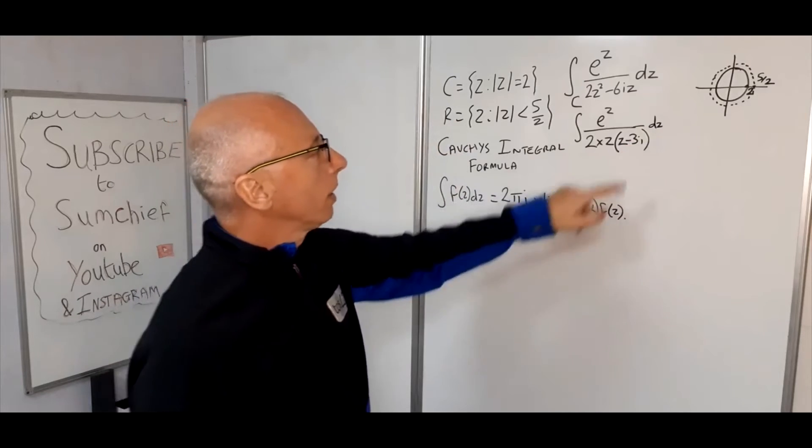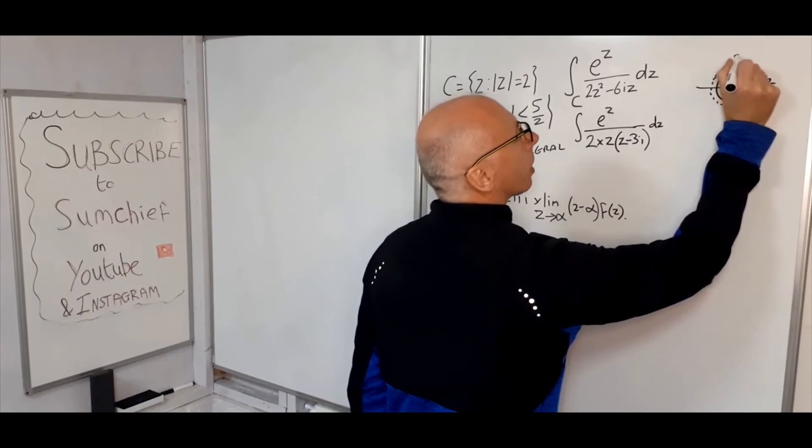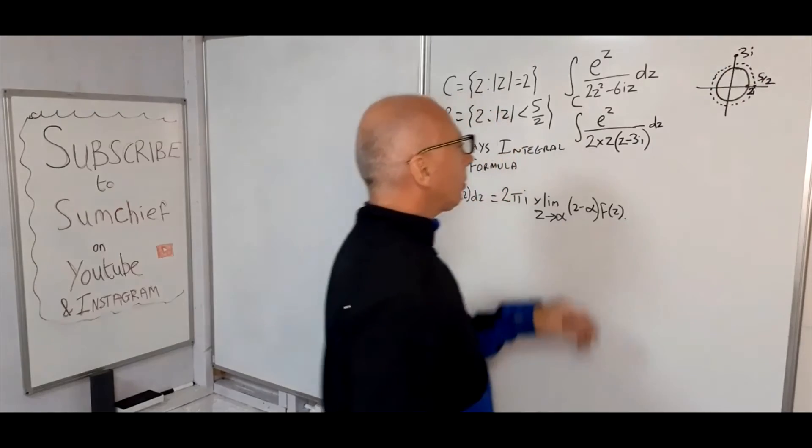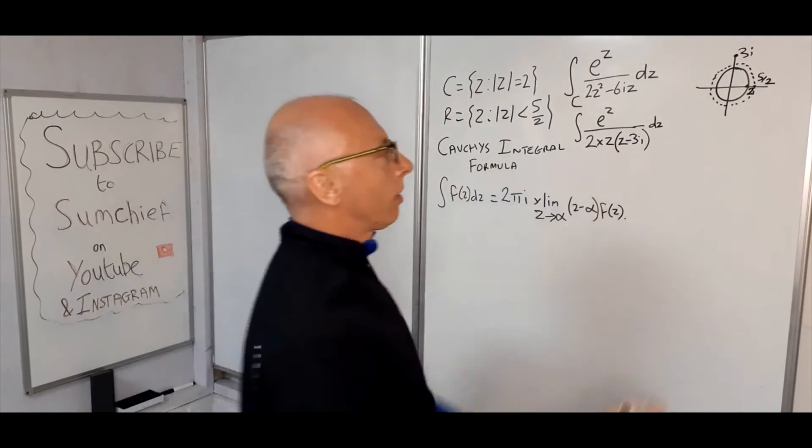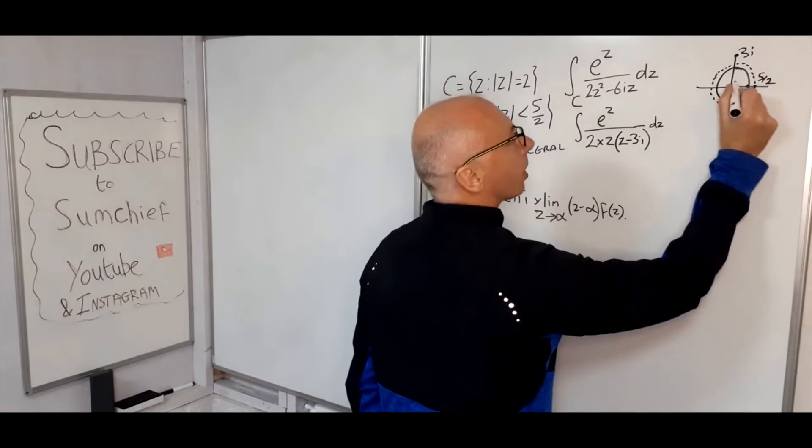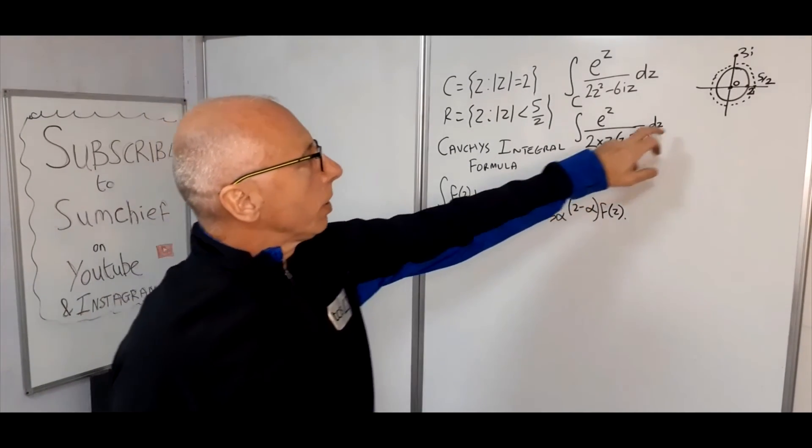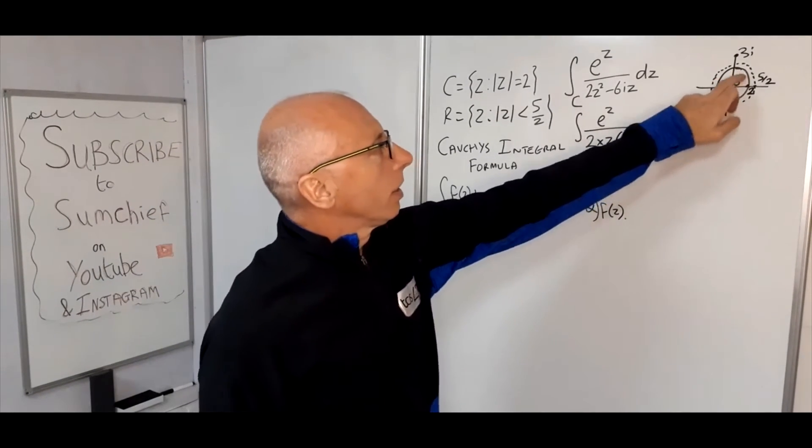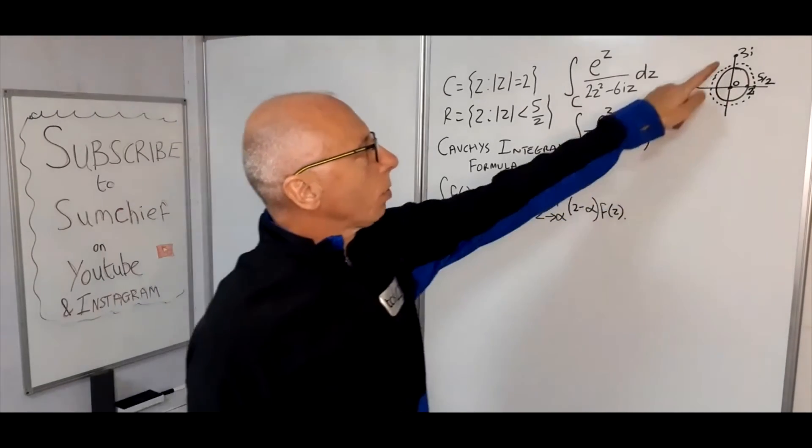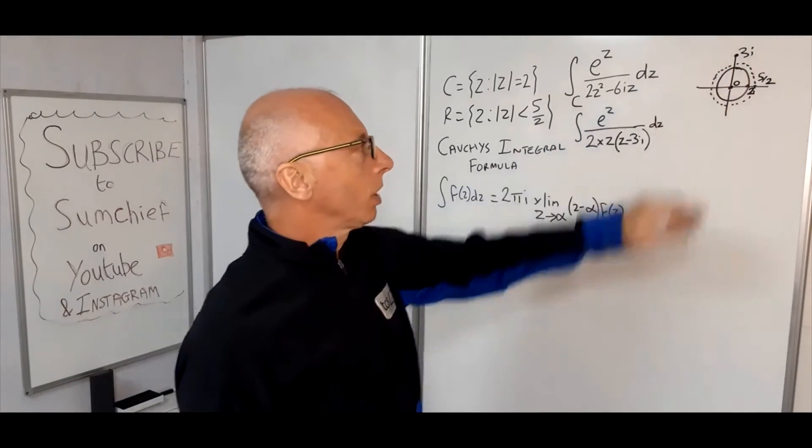So we've got one at 3i, which is going to be up here somewhere, and the other one is when z equals 0. That's 0. So we're only interested with the singularities inside the closed contour. This one here, which is outside, we don't need to worry about.